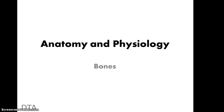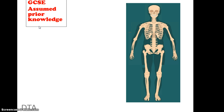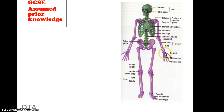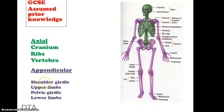Welcome to another DTA screencast. In today's session we're looking at anatomy and physiology, principally looking at bones. There is a certain amount of assumed knowledge from your GCSEs when transferring and moving up towards an A-level, and that would be the names of all of the bones. You need to have examples of bones from the axial and appendicular skeleton and be quite comfortable with the terminology.